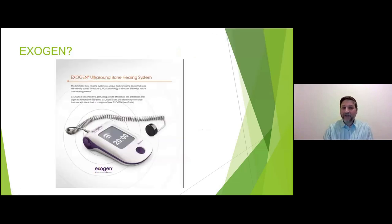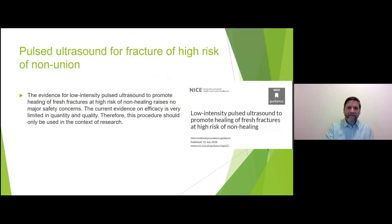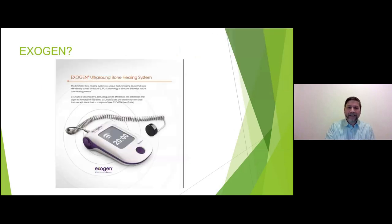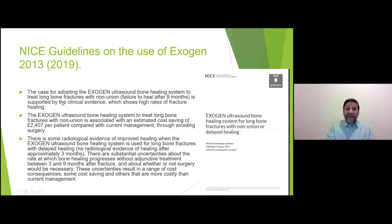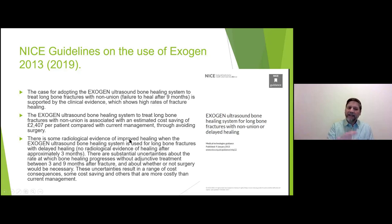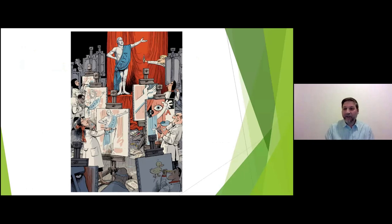However, for Exogen specifically — low voltage, low wave ultrasound — NICE says it is supported by clinical evidence with high rates of fracture healing, saving approximately £2,400 per patient compared with current management by avoiding surgery. That is for established non-union; evidence for delayed union is not as robust. In the exam, don't just say ultrasound — say Exogen specifically, because that is the name cited in the NICE guidelines.